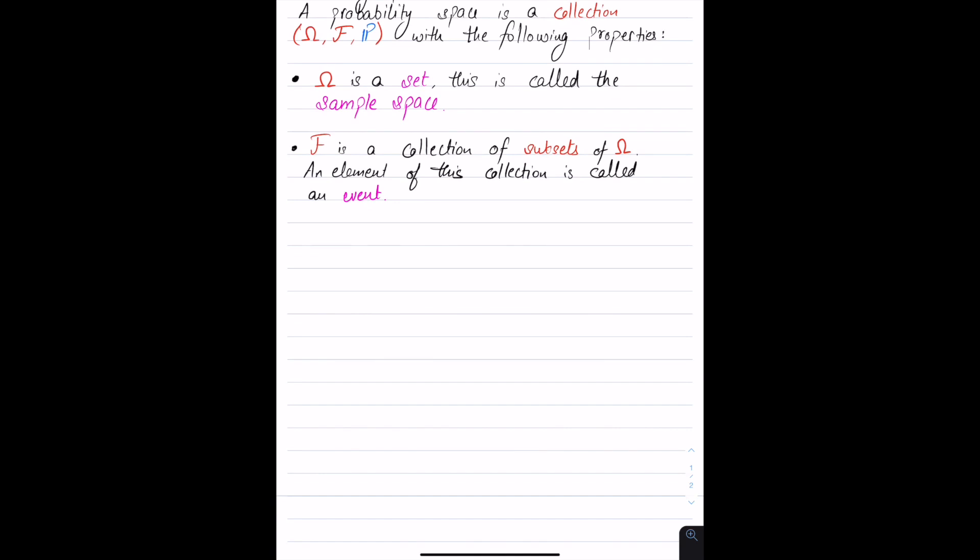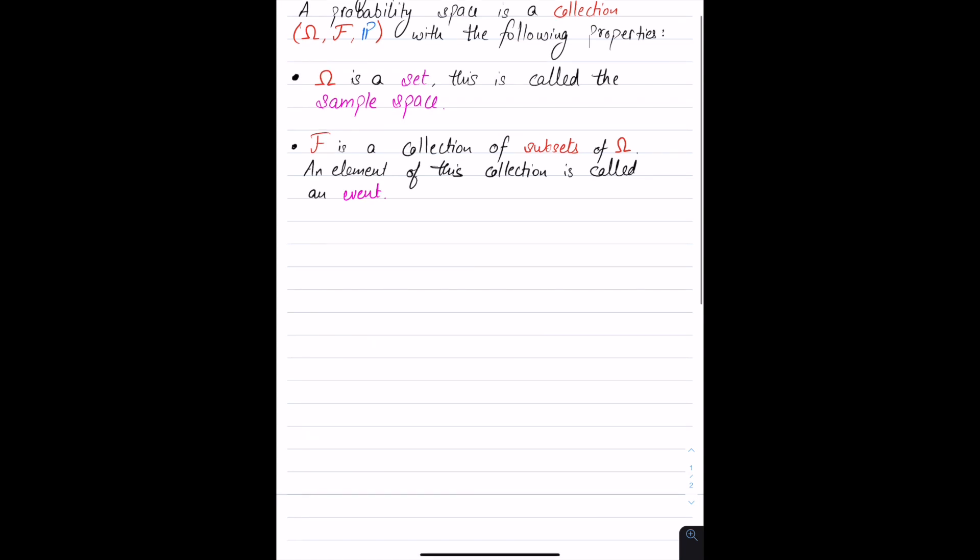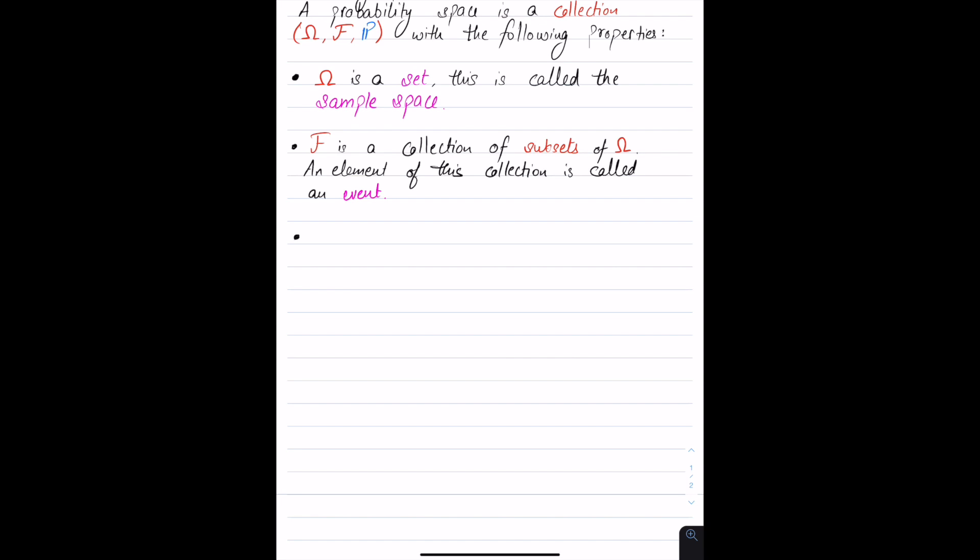So far, we have omega as a set, which we call the sample space. And F is a collection of subsets of omega. And each element of F is called an event. Now, if you guys have come across measure theory, you must have heard that probability is a measure. Or if you haven't, then we have that...